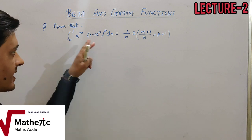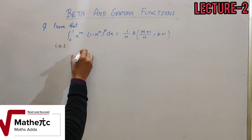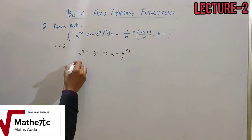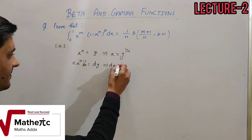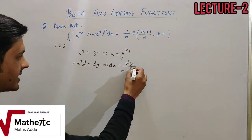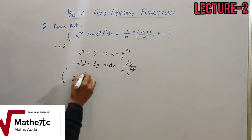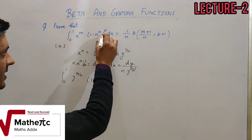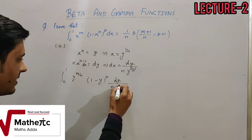Now the next numerical requires you to prove a condition for the beta function. The left-hand side is solved as follows: let x^n = y, so x = y^(1/n). Differentiating: n · x^(n-1) dx = dy, so dx = dy / (n · x^(n-1)). x^(n-1) = (y^(1/n))^(n-1) = y^((n-1)/n). The limits again remain 0 to 1.